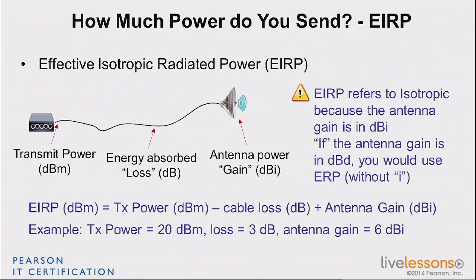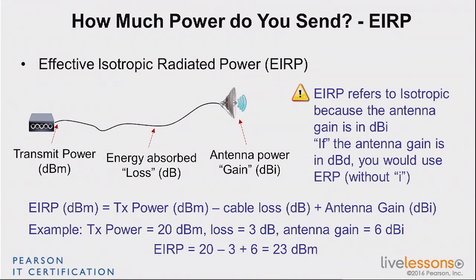Let's take an example. You have a transmit power of 20 dBm, going through a cable that loses 3 dB, and your antenna gain is 6 dBi. What is the EIRP? It's transmit power 20 dBm, minus cable loss 3 dB, plus antenna gain 6 dBi — the result is 23 dBm. EIRP is measured in dBm. That may sound strange since cable loss and antenna gain are not in dBm, but that's how EIRP is measured. Being able to understand and calculate EIRP is critical to your professional skills — make sure you master this.